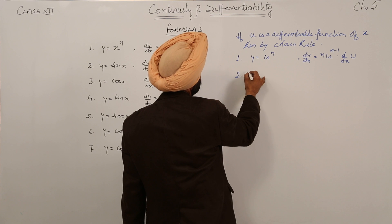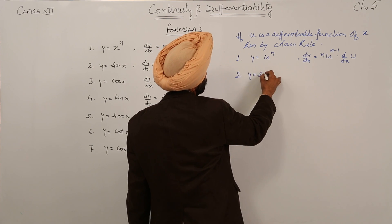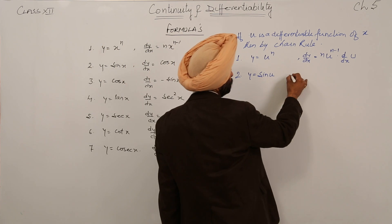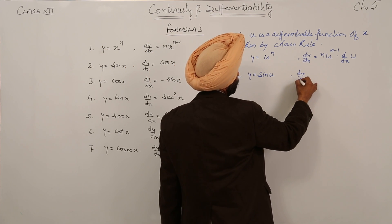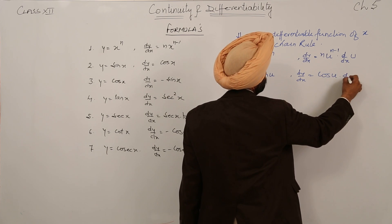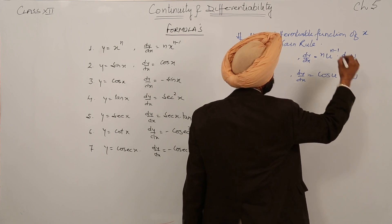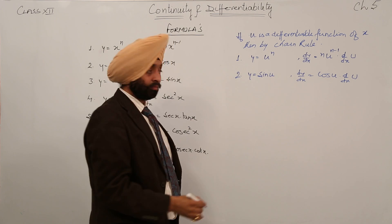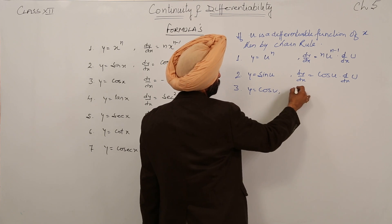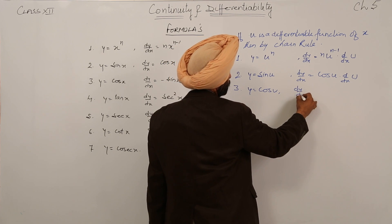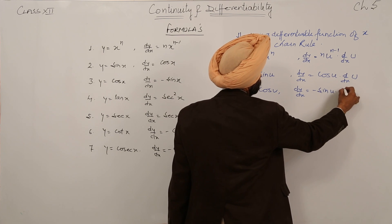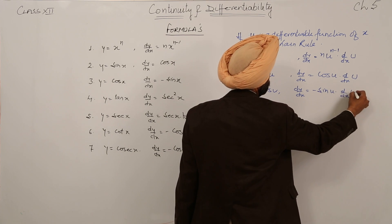Number 2: y is equal to sin u. This becomes dy/dx is equal to cos u, into d/dx of u. Number 3: y is equal to cos u. dy/dx is equal to minus sin u, into d/dx of u.